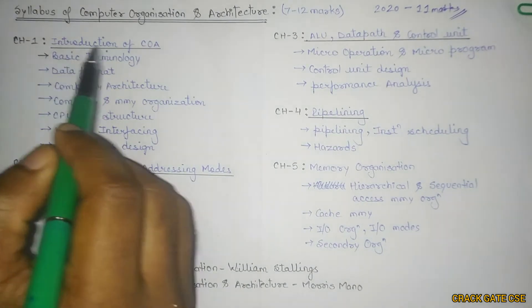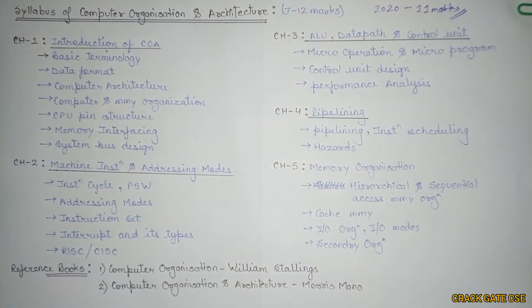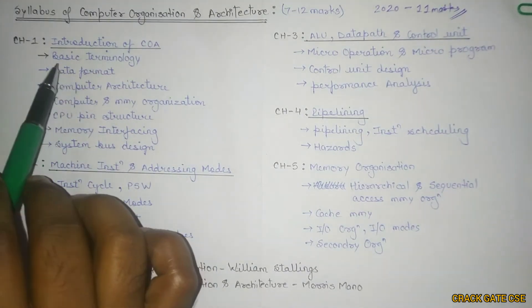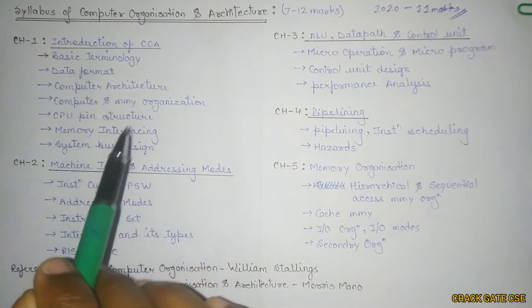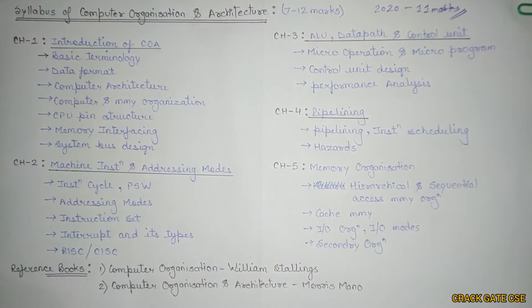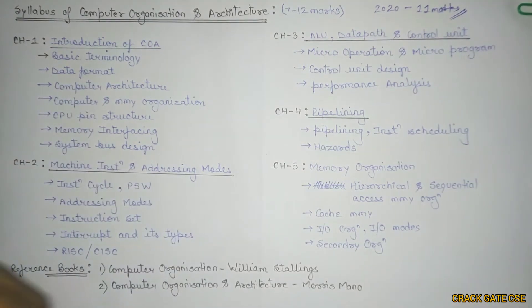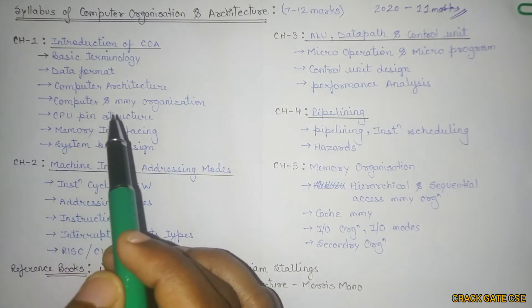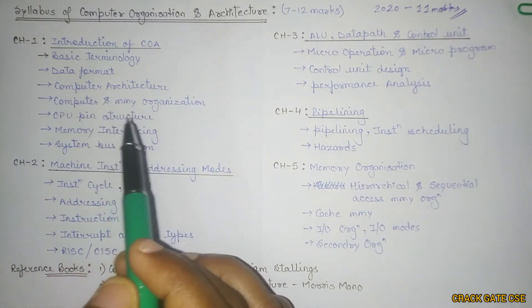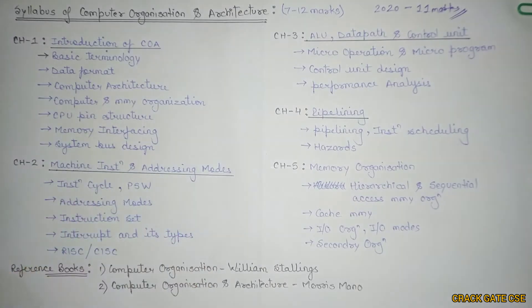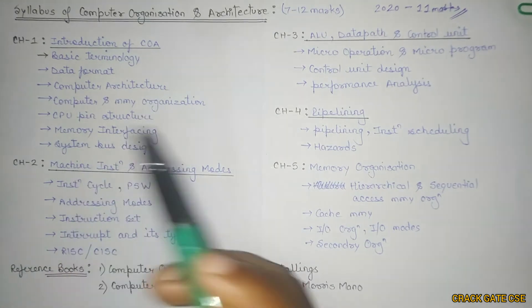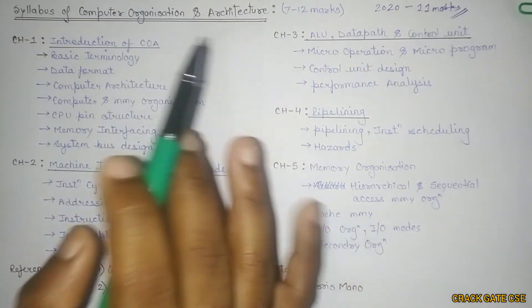Chapter one is Introduction of Computer Organization and Architecture. This will start from basic terminologies like what is computer, what is program, what is instruction and what is data, and the different views as per the designer's and user's perspective. Then we'll move on to data formats like fixed point data and floating point data format. In fixed point, we'll understand signed format, unsigned format and complement format. In floating point, we'll understand single precision and double precision, that is 32-bit and 64-bit format.